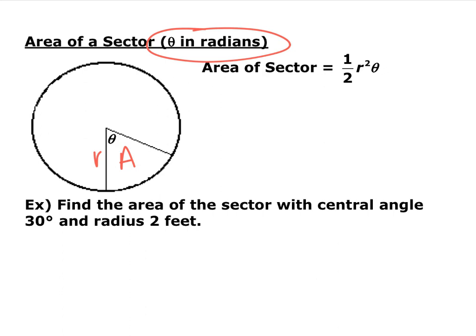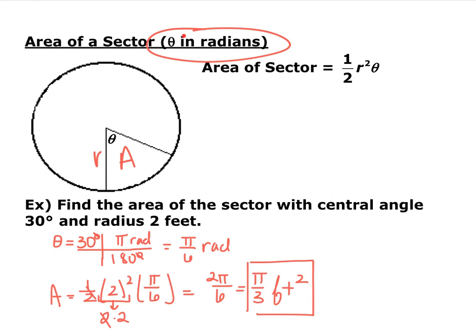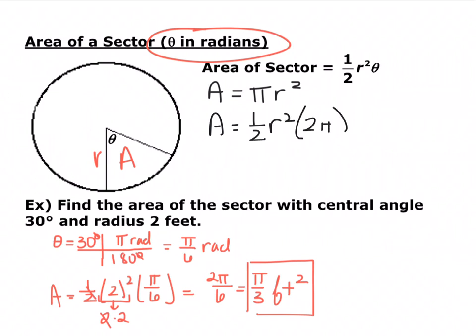Find the area of a sector with a central angle of 30 degrees and a radius of 2 feet, keeping in mind the formula requires θ in radians. First convert: 30 degrees equals π/6 radians. Then A = (1/2)(2²)(π/6) = π/3 square feet. This formula also derives the circle area formula A = πr², since a full revolution means θ = 2π.